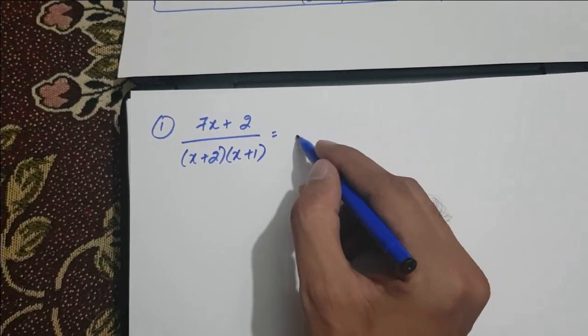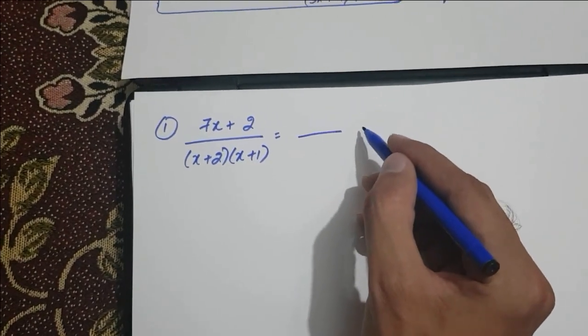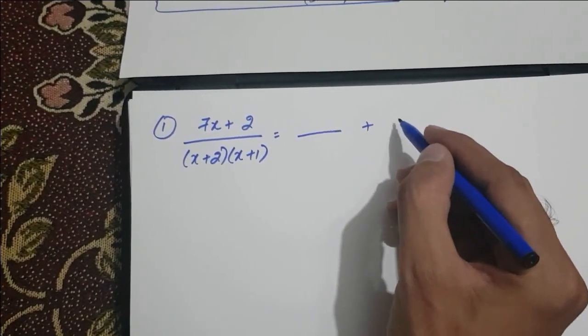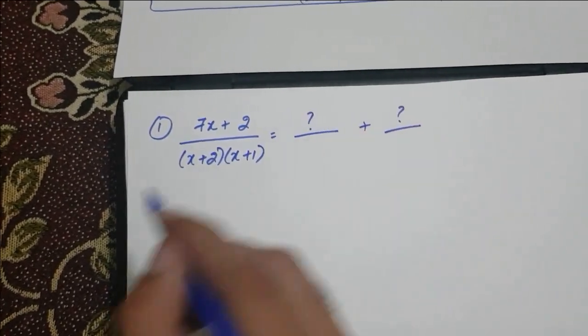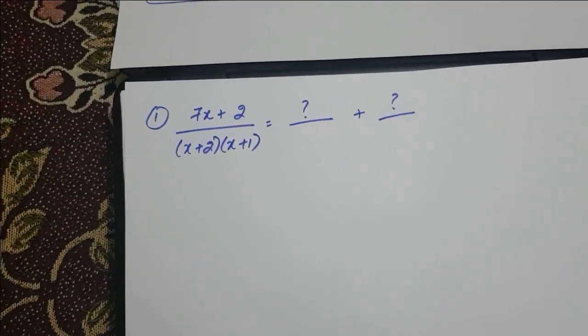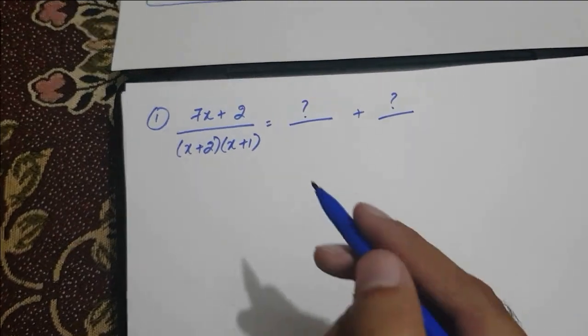And now we have to find what are the actual fractions by sum of whom we got this resultant fraction.